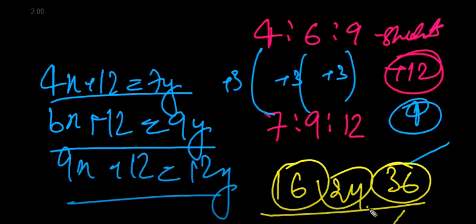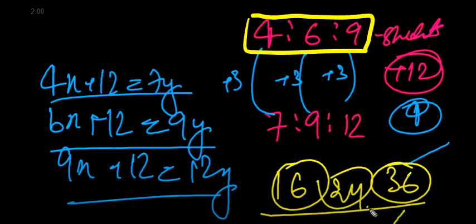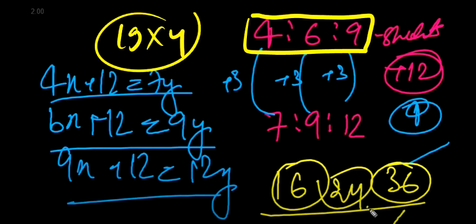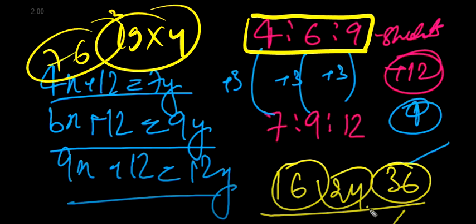Now we have factor 4. So what will the total number of students be? We will add this: 15 plus 4 is 19, multiplied by 4, so this will be 76 students.